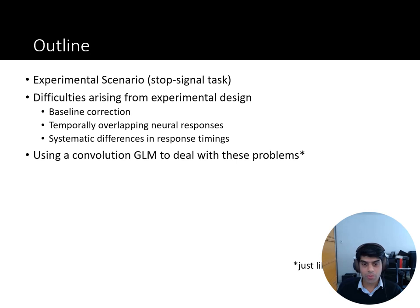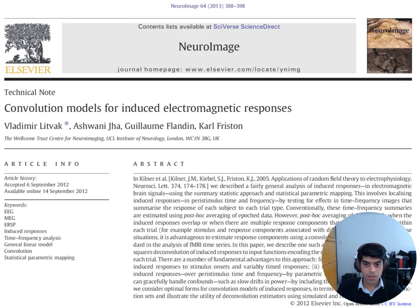In this talk, I'm going to outline an experimental scenario, the stop signal task, which requires us to use the convolutional GLM. Then I'm going to describe the particular problems with analyzing that task, and then I'll describe the convolutional GLM. This is the original paper where we describe the approach if you want to read more about it.